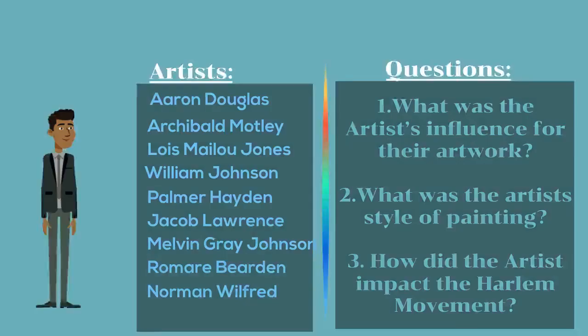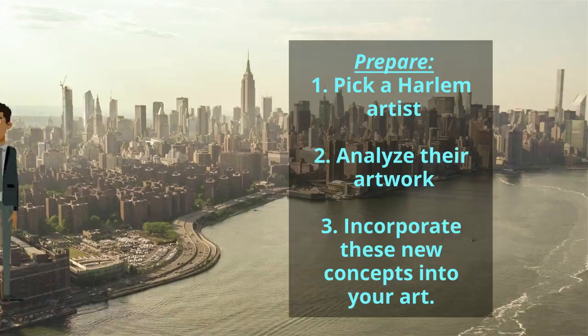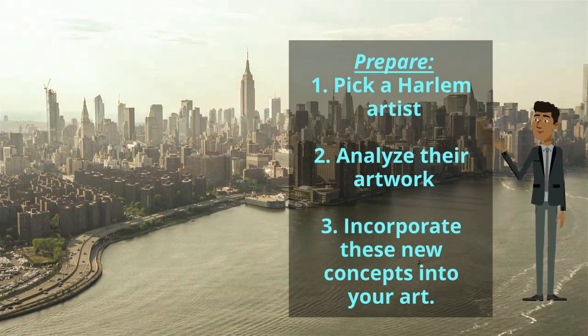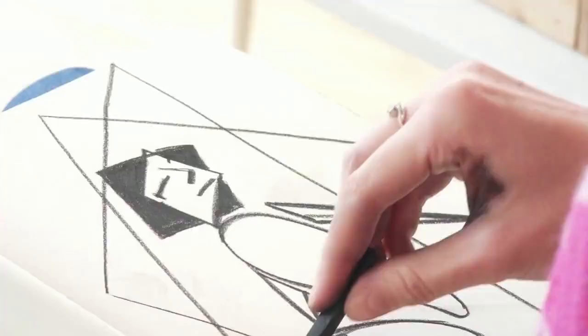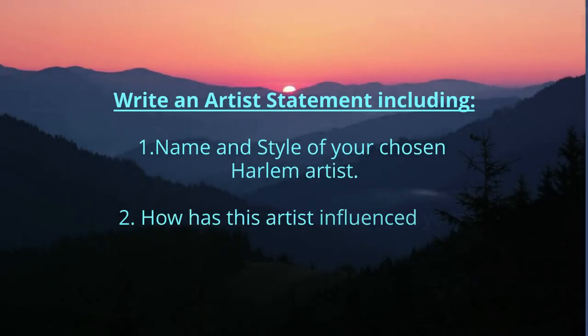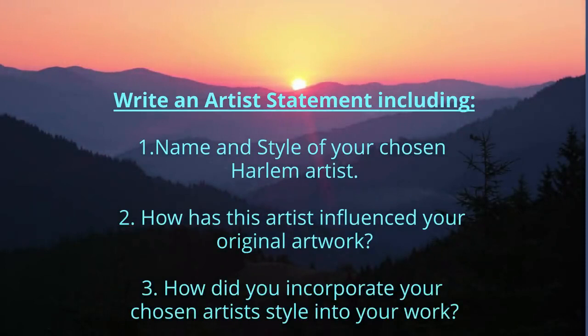Now it's time to create your own artwork inspired by the Harlem Renaissance. To prepare, first choose one Harlem artist and find about three images of their artwork that inspire you. Analyze the art by describing their style, subject matter, and medium, and then determine how you can incorporate similar elements and principles of their artwork into your original composition. Next, create a few sketches for your new art. Ask yourself: does your artwork evoke emotion, express a specific idea, or tell a story? After you have all of your preparation completed, start to create your final composition. Lastly, after your artwork is finished, start to write an artist statement reflecting on your artwork and how it is inspired by your chosen Harlem artist. When writing your artist statement, be sure to include the name and style of the Harlem artist that influenced your composition. Also describe how you incorporated their style and subject matter into your original artwork.